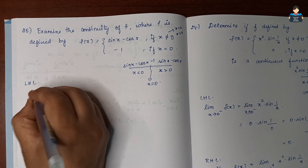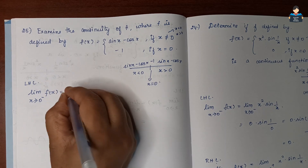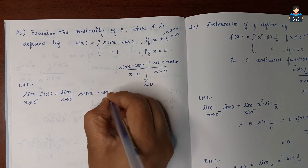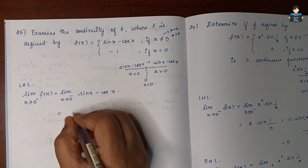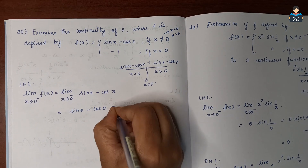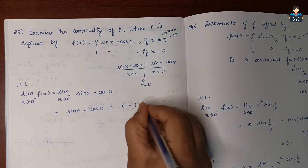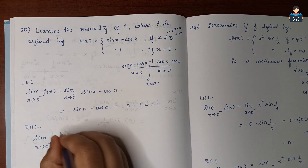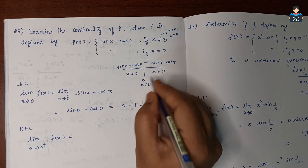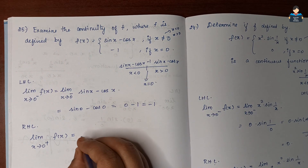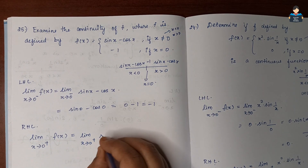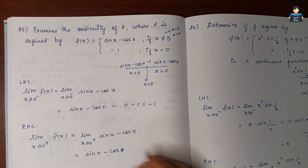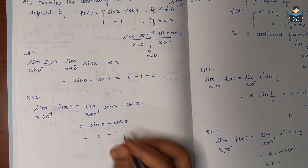Left Hand Limit: limit as x tends to 0⁻ of f(x) = limit as x tends to 0⁻ of (sin x − cos x) = sin 0 − cos 0 = 0 − 1 = −1. Right Hand Limit: limit as x tends to 0⁺ of f(x) = sin x − cos x, substituting x = 0 gives sin 0 − cos 0 = 0 − 1 = −1.